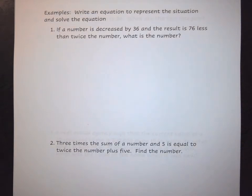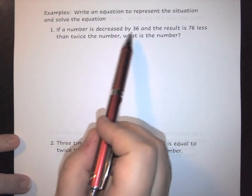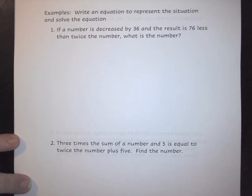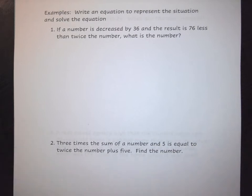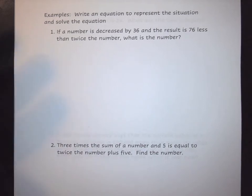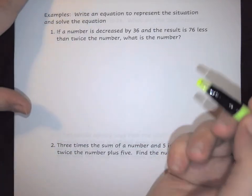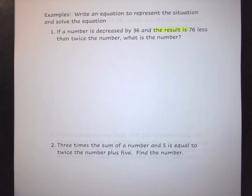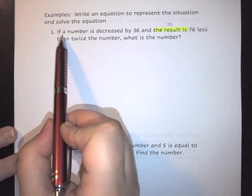So first we're going to unpack this. The problem says: if a number is decreased by 36 and the result is 76 less than twice the number, what is the number? We have to pull this apart into three pieces: the left hand side, the equal sign, and the right hand side of an equation. The most important thing is to identify where that equal sign is first, because that's going to be your dividing factor. We're looking for key phrases like 'is equal to,' 'equals,' 'the word is,' or 'the result.' In this case we have the phrase 'the result is,' so that is your equal sign.